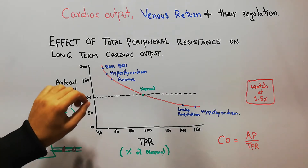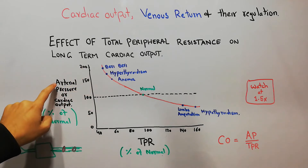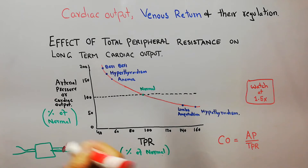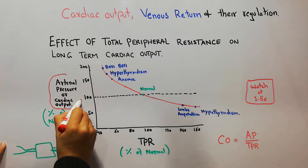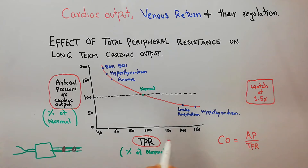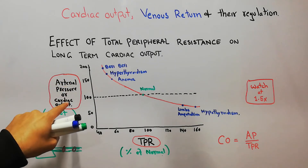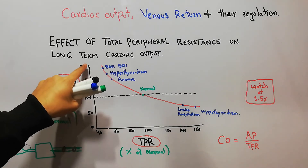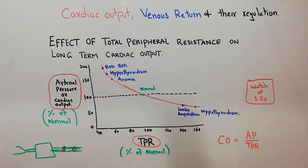On the y-axis we have plotted the arterial pressure or the cardiac output, and on the x-axis we have plotted the total peripheral resistance. The cardiac output is plotted as a percentage of the normal, not the exact values. Similarly, the total peripheral resistance is plotted as a percentage of the normal values.